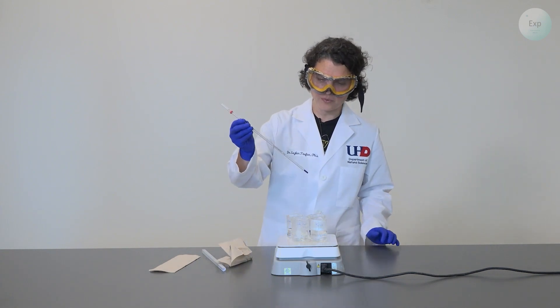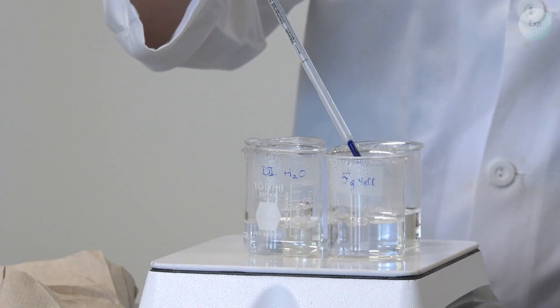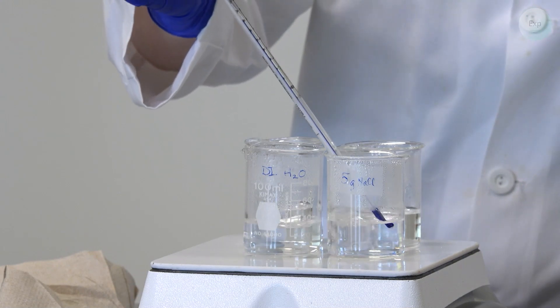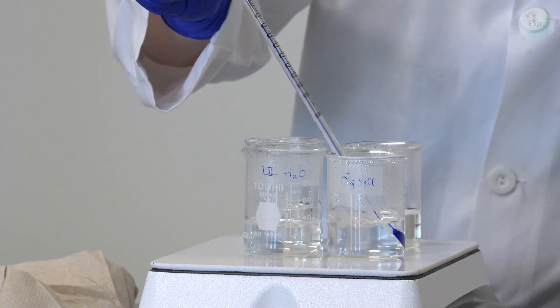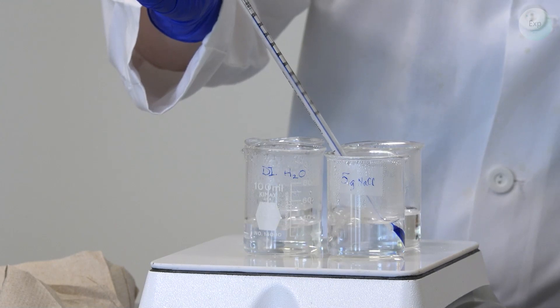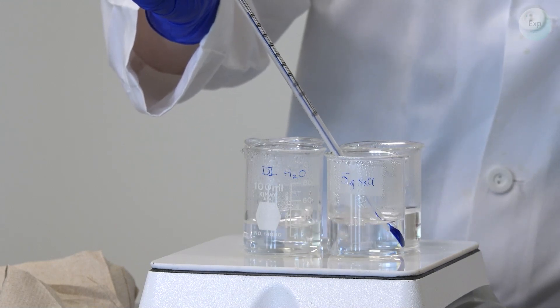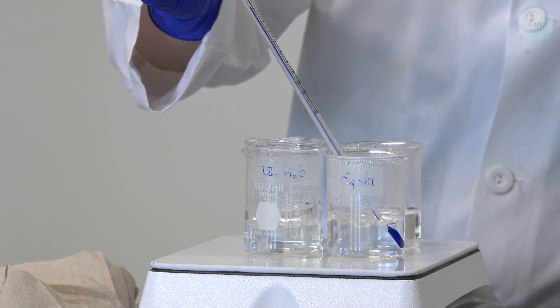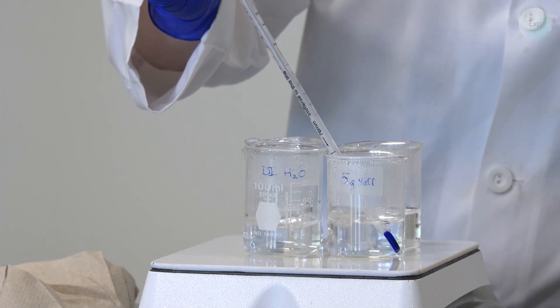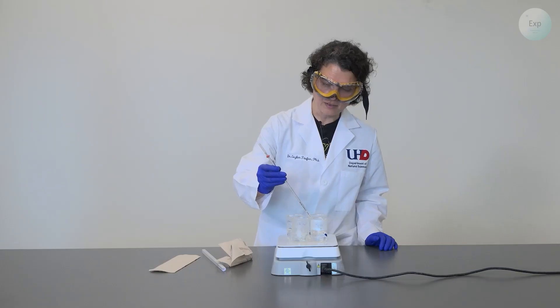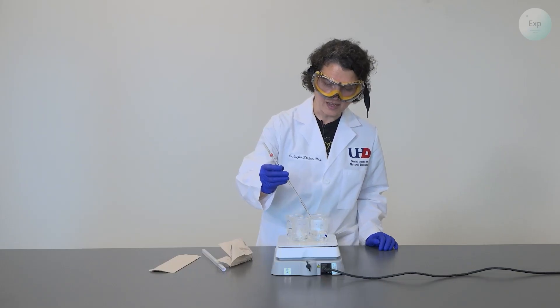Then move the thermometer into our first solution that contains the five grams of sodium chloride. We follow the same process. Insert the bulb of the thermometer inside the solution, but don't touch the bottom of the beaker. Then leave it there for at least a minute until the temperature goes as high as it can.